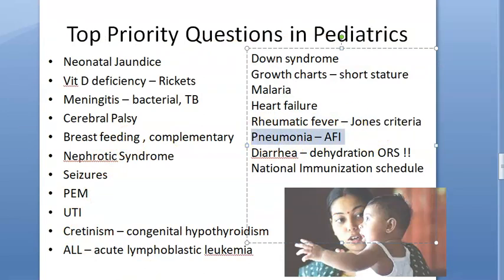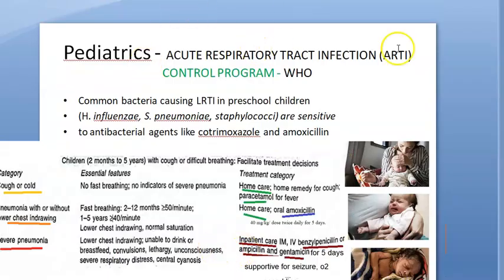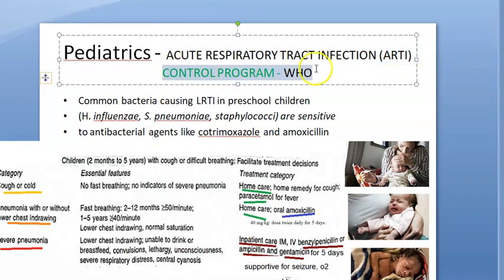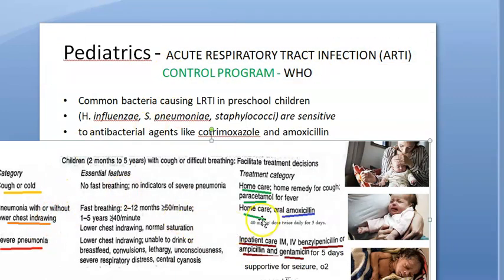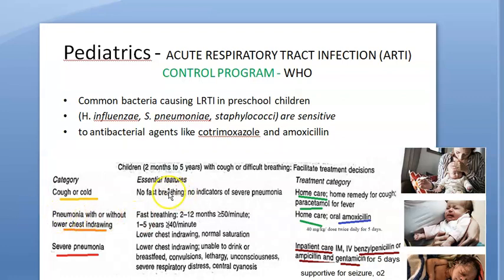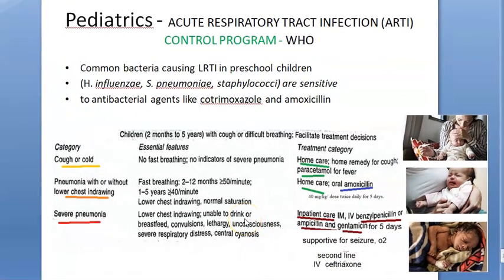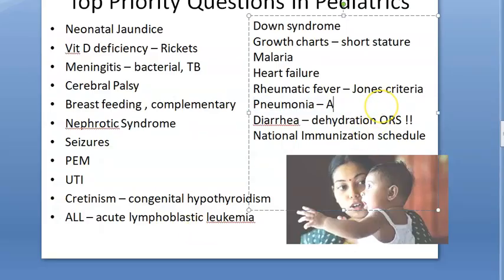Pneumonia/ARI: know the Acute Respiratory Infection (ARI) control program categories. There are three categories. If the baby has no fast breathing but has fever, cough, and cold — no pneumonia; give home care with paracetamol. If there is fast breathing — home care with amoxicillin. If there is severe pneumonia — fast breathing, lower chest in-drawing, and lethargy — admit and give IV ampicillin and gentamicin. Treat any additional problems like seizures.